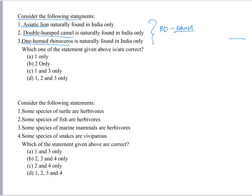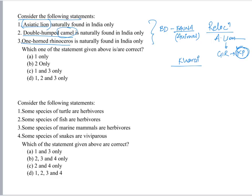UPSC in earlier years asked about the relocation of the Asiatic lion from Gir to Kuno Palpur — we had to identify which national park was involved. Earlier a question was asked regarding the Kharai camel and its peculiar features. Another important animal for UPSC is the tiger — an important indicator species of grassland ecosystems that provides ecosystem services and is important in the food chain. UPSC has asked multiple questions on tigers.